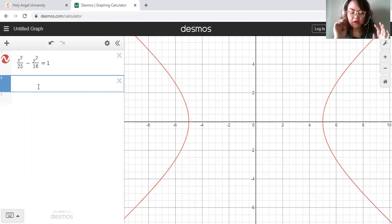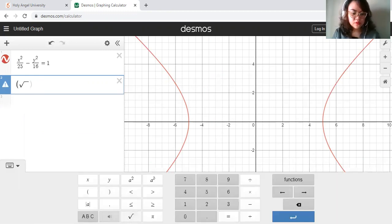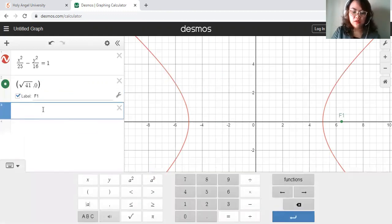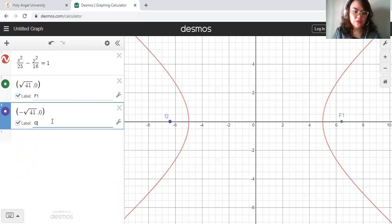For the foci, we have 25 plus 16. We have the square root of 41. Square root of 41, 0, and we label this as focus 1 or F1. Then on the other side, it would be negative square root of 41, 0. And that's the other focus, this is F2.